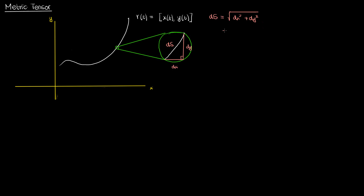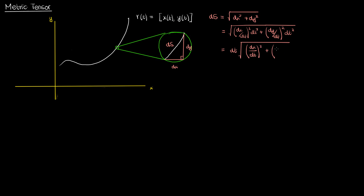Since x and y are functions of t, I can write the differentials dx and dy in terms of the derivatives dx by dt and dy by dt, multiplied by a dt term. I can then take the dt out of the square root to end up with the following expression for ds.